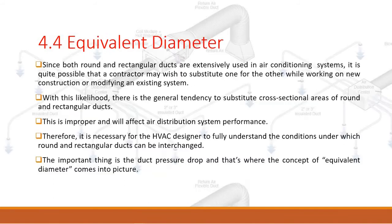Equivalent diameter. Since both round and rectangular ducts are extensively used in air conditioning systems, a contractor may wish to substitute one for the other during new construction or when modifying an existing system. There is a general tendency to substitute cross-sectional areas of round and rectangular ducts; this is improper and will affect air distribution system performance. Therefore, it is necessary for the HVAC designer to fully understand the conditions under which round and rectangular ducts can be interchanged.